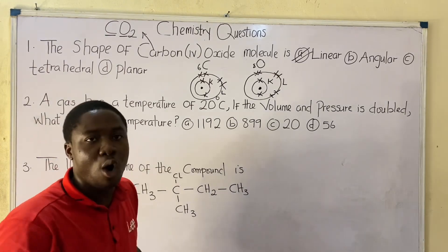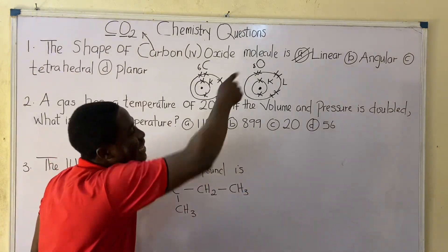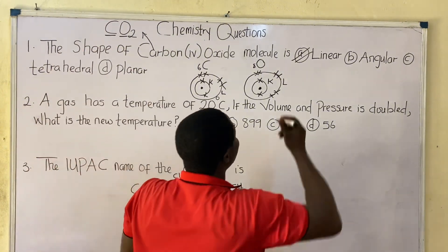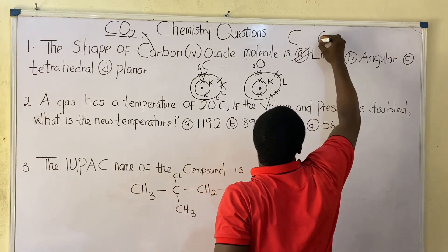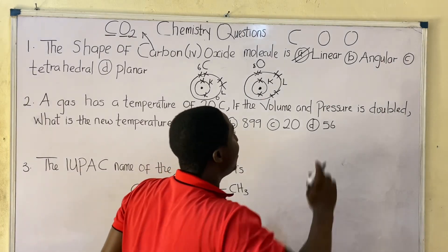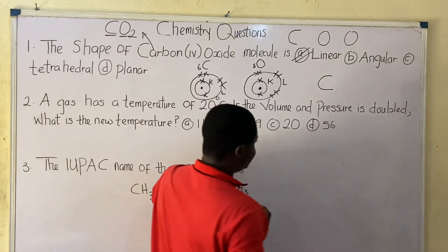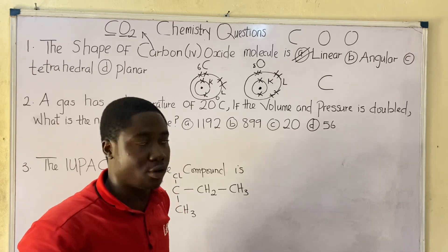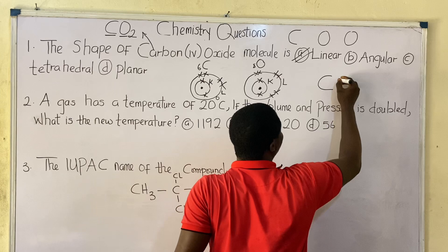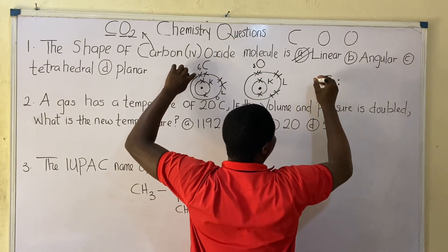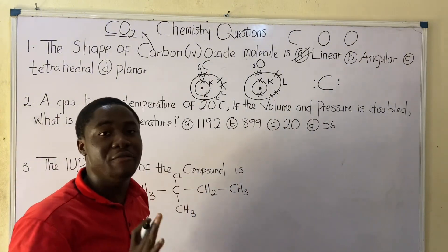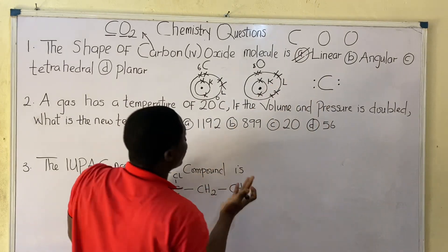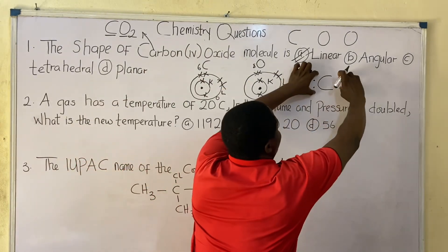Now let's draw the Lewis structure of CO2 to show that it is linear. CO2 has one carbon atom and two oxygen atoms. For carbon, there are 4 electrons in the outer shell. Using the Lewis structure pattern, we draw the 4 electrons in pairs — two electrons on one side and two on the other.